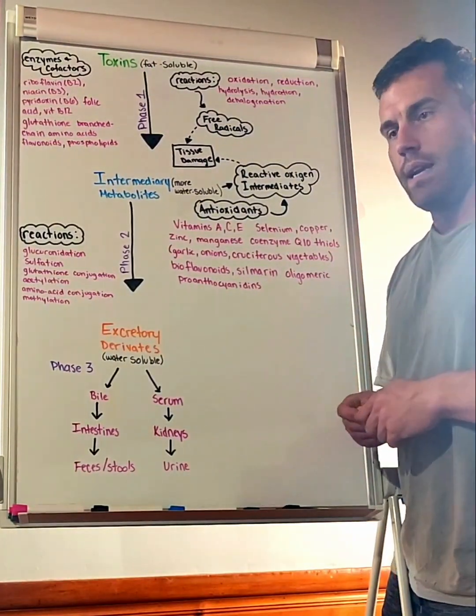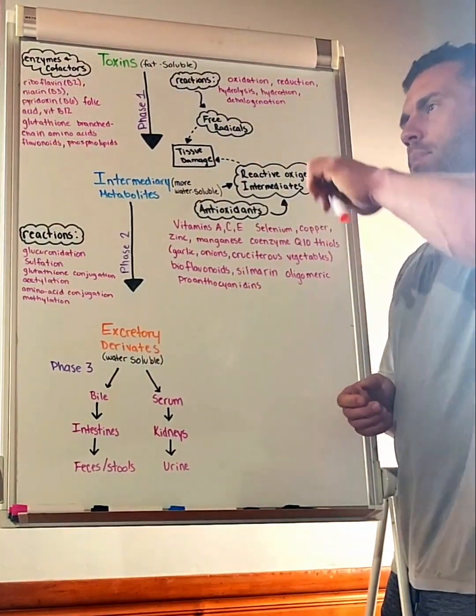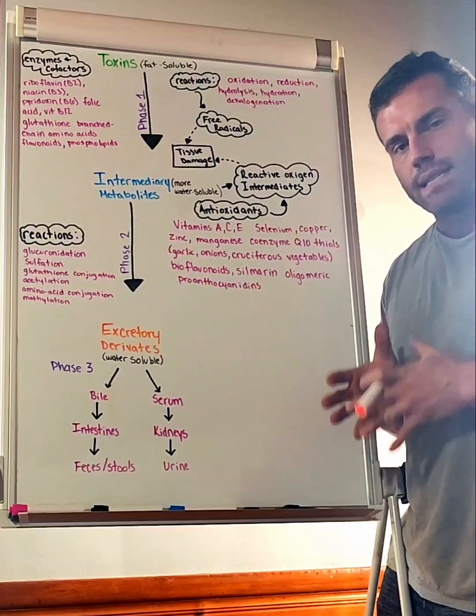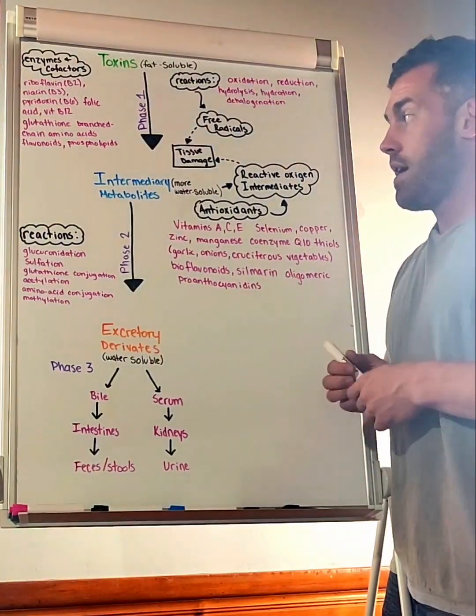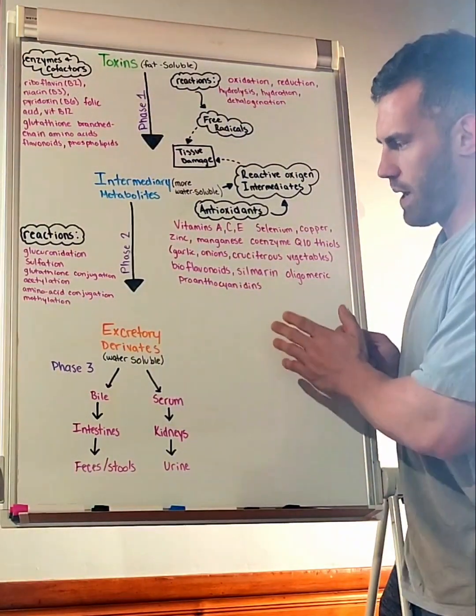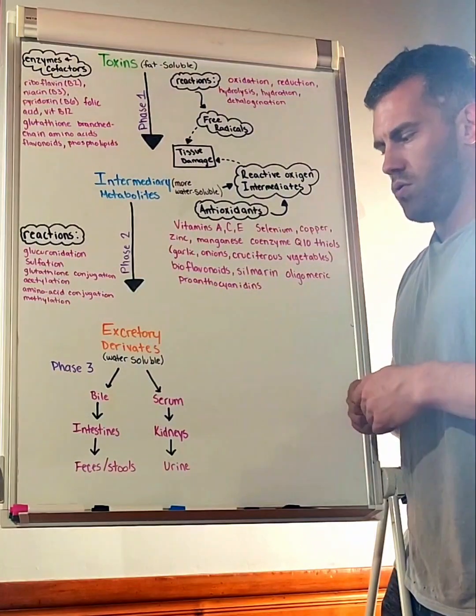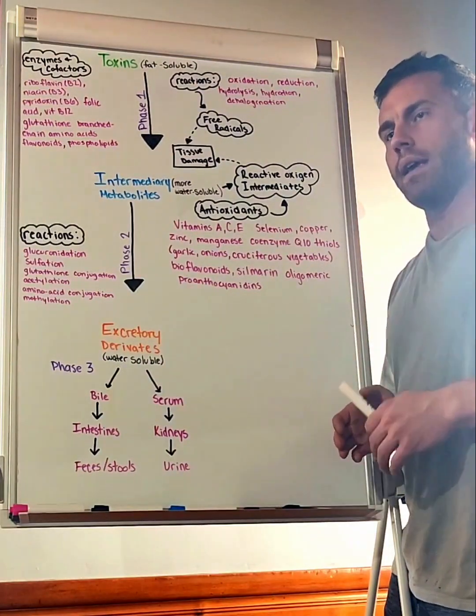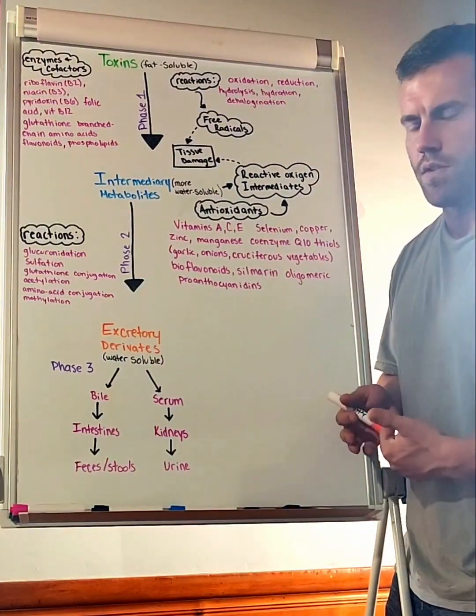In phase two, once we have all these nutrients that we need, we're trying to basically take these toxins or molecules and figure out what we want to do with them—do we want to get rid of them, push them somewhere else in the body, where do they go, what's the use for them, and so forth.